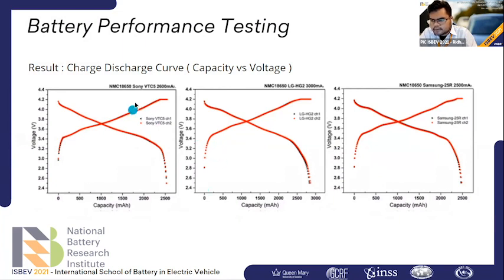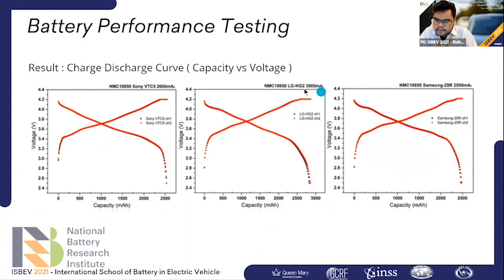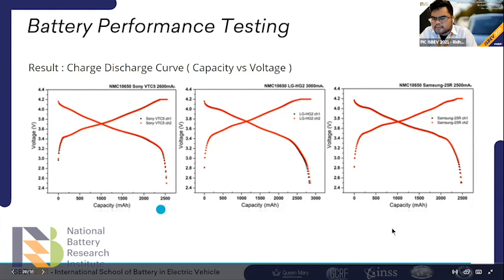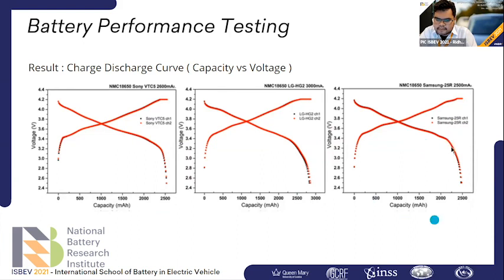From the charge-discharge curve showing actual capacity versus voltage, we can see that the Sony battery, labeled at 2600 mAh, measures about 2500 mAh after 50 cycles — not bad. The LG battery, labeled at 3000 mAh, drops significantly below that after 50 cycles — not good. The Samsung 25R, labeled at 2500 mAh, stays at 2500 mAh after 50 cycles, making it the best choice for consumers as its capacity does not drop significantly.